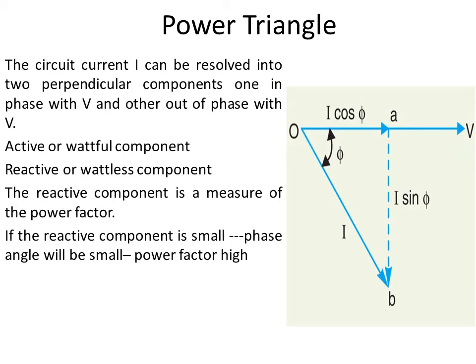Now the circuit voltage is V, and the current lags behind this voltage by angle phi. As you can see in the picture, it is for an inductive load. Voltage V is taken as a reference line, and the current I lags behind the voltage by angle phi. The circuit current can be resolved into two perpendicular components: one which is in phase with V — that is I cos phi — and one which is at 90 degrees to V — that is I sin phi. I cos phi is known as the active or wattful component, and I sin phi is known as the reactive or wattless component.